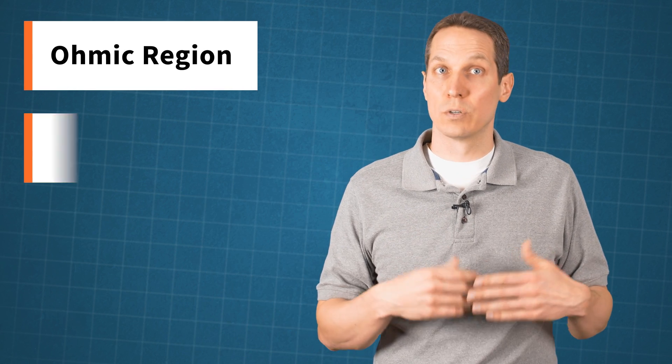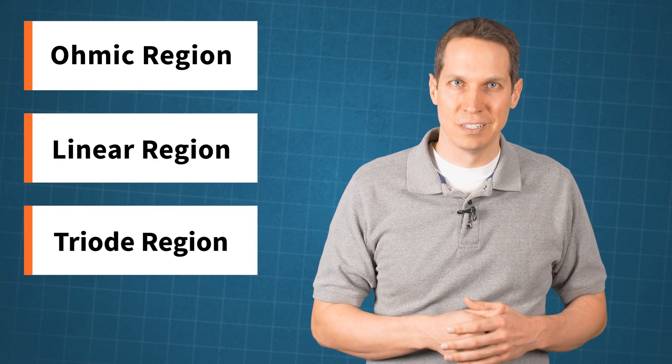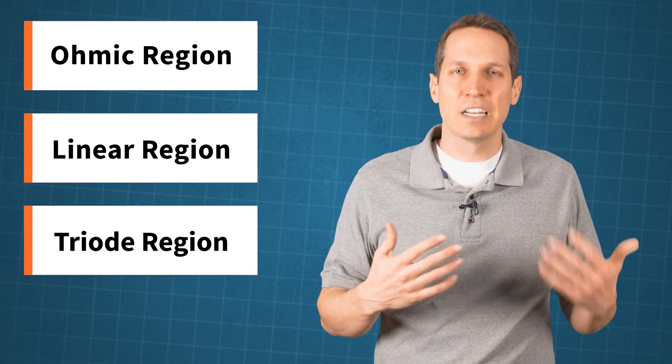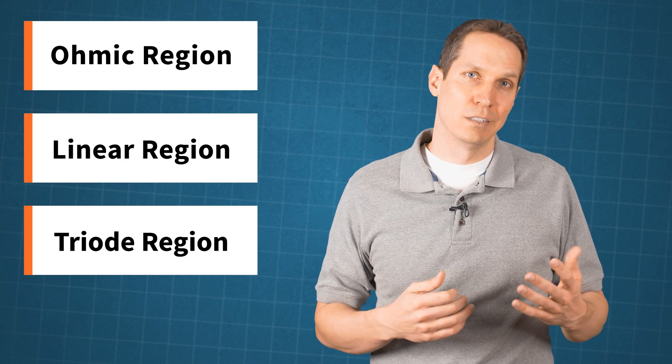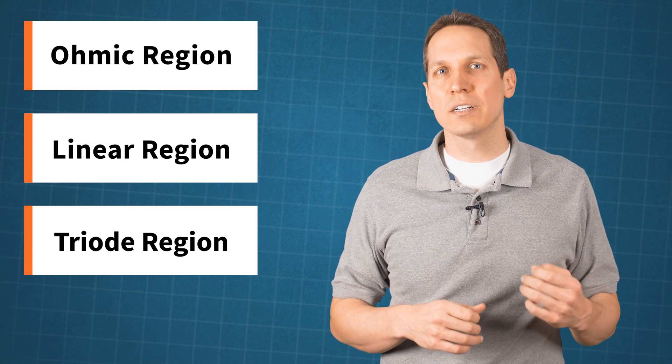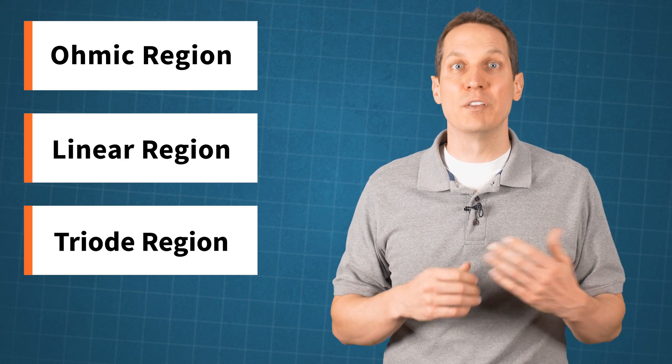Because of this, this region of operation is called the ohmic region, or the linear region, or the triode region. The terms ohmic or linear make sense to me because it's acting like a linear resistor at this point. The term triode is because the drain current of the FET depends on the drain voltage of the MOSFET, which is similar to vacuum triodes from back in the day, I guess. An important part of this region is that if the drain source voltage gets too large compared to the gate voltage, the MOSFET will go into the saturation region.